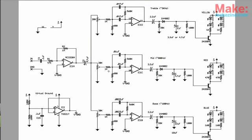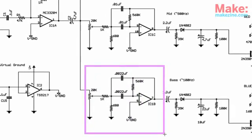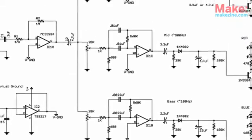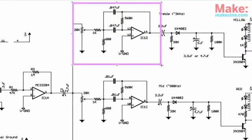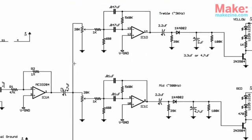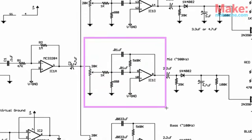Each of these filters allows a different part of the audio spectrum to pass through. Relatively slow changes in the audio waveform will appear at the output of ICB. Fast fluctuations will be output from ICD, and the mid-frequency band will pass through ICC's filter.